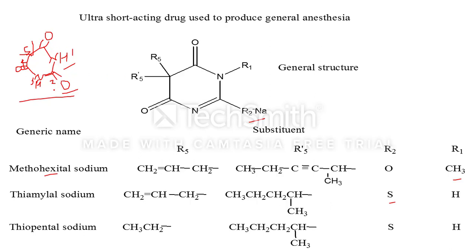This is the general structure of ultra-short acting barbiturates. The first example is methohexital sodium. In methohexital sodium, at position one, R1 is a methyl group — the hydrogen is replaced by methyl. R2 is oxygen. At the fifth position, R5 is a propyne group. R5' is an isopentyl or allyl group substituted at the fifth position. This is the example of methohexital sodium.